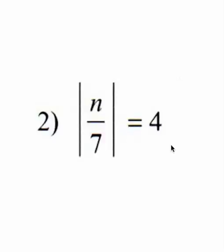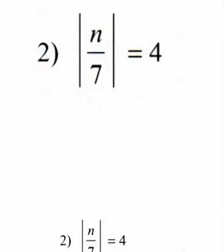With absolute value, what you're going to do is set it for positive — which is set right here — and also for negative. So you're going to get two answers. Let's go ahead, and I'm going to move this down to show you how I did the problem.